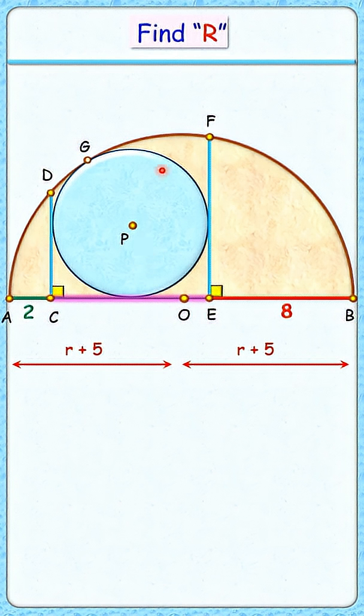Now, as this blue and brown circle are touching each other at point G, by theorem their centers—that's point O and point P—and the point of contact will lie in a straight line.